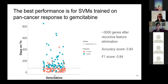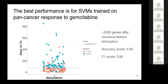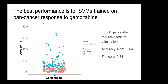I've done this analysis for every therapy and cohort combination in the POG cohort. The gemcitabine cohort worked particularly well for pan-cancer response — across all cancer types. The model performed best on breast cancer specifically. The graph shows time on treatment on the y-axis; the model's predictions are colored dots — blue dots should be above the median line, red dots below. Accuracy and F1 scores are good, and recursive feature elimination has narrowed down to around 3,000 genes most predictive for this task.